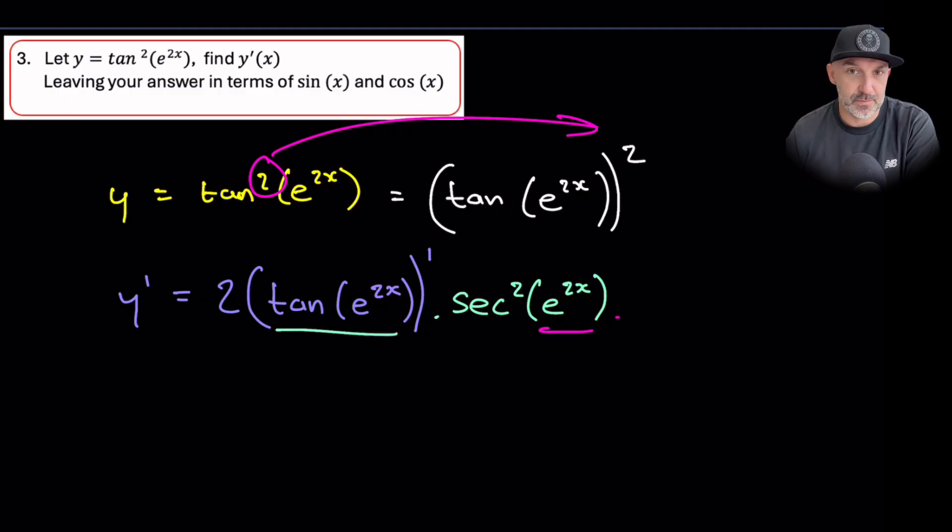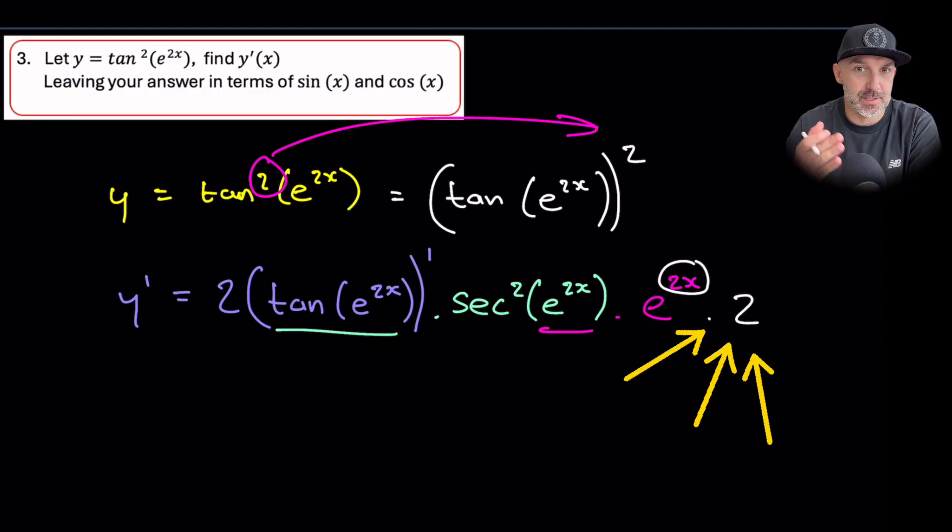But now we have to multiply by the derivative of that bracket. We've got to multiply by the derivative of e to the 2x. Now, the derivative of e to the 2x, first of all, it stays exactly the same. But then you've got to multiply by the derivative of the power. So there's multiple steps. It's like a domino effect in order to unpack all of this.